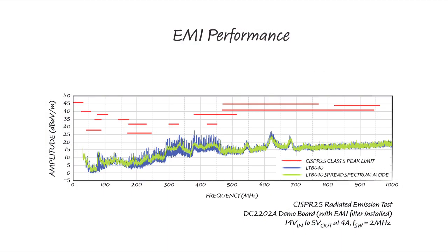Here is a plot of the LT8640's radiated EMI performance. The LT8640 reduces EMI by more than 20 dB compared to the previously mentioned LT8610 and here we can see that it easily passes the CISPR25 class 5 peak limits. It also has a spread spectrum feature which further lowers EMI by another 6 dB.